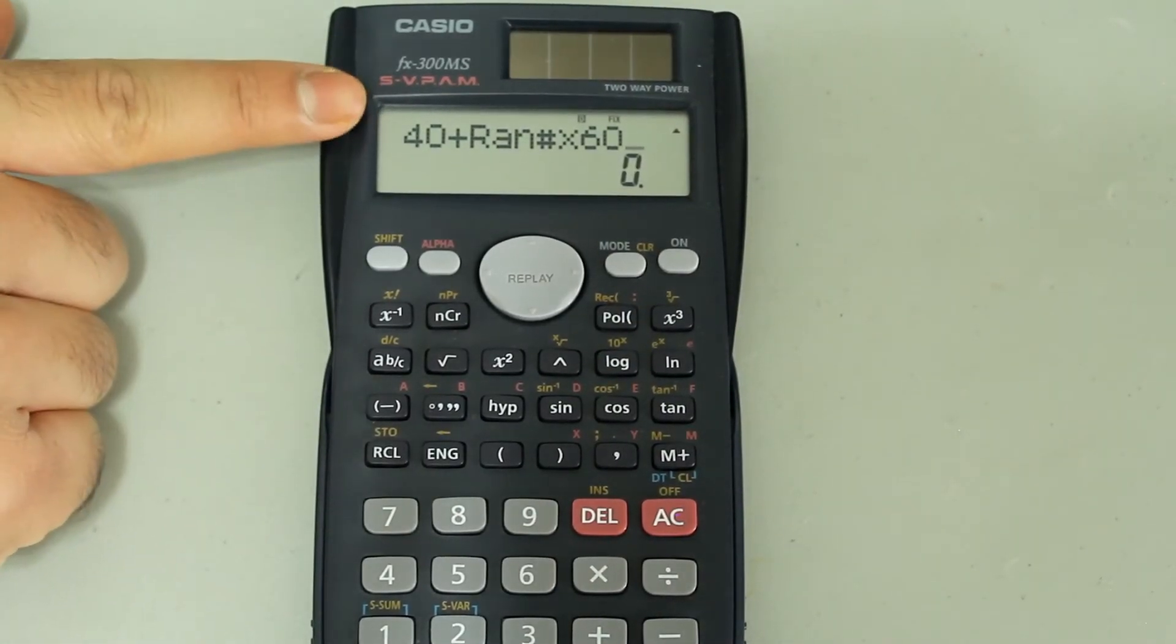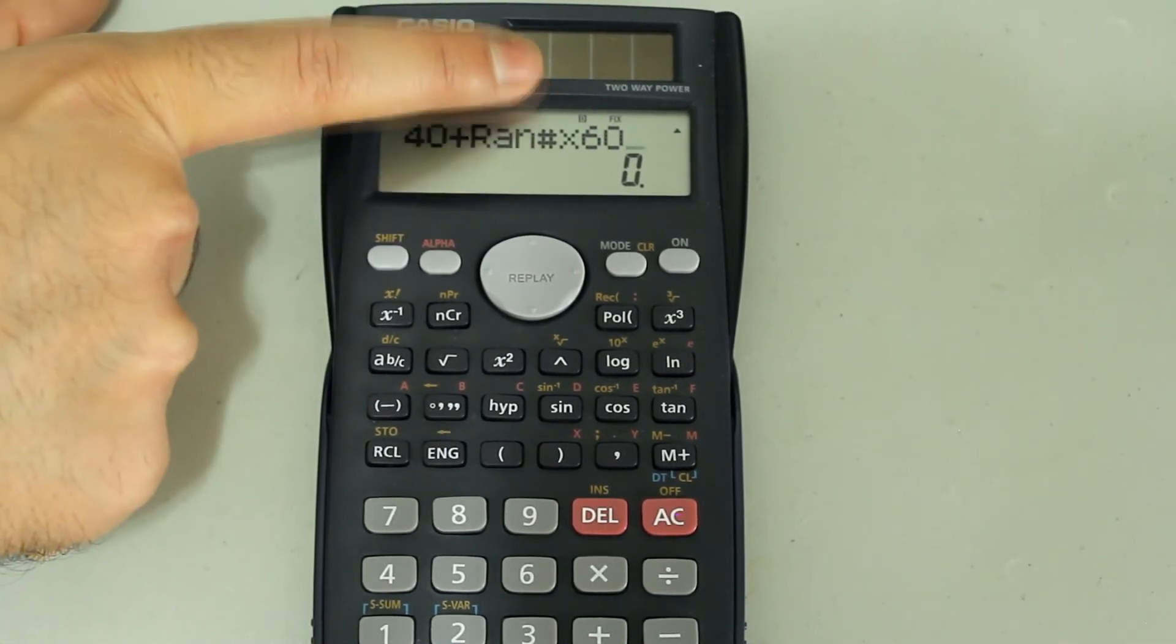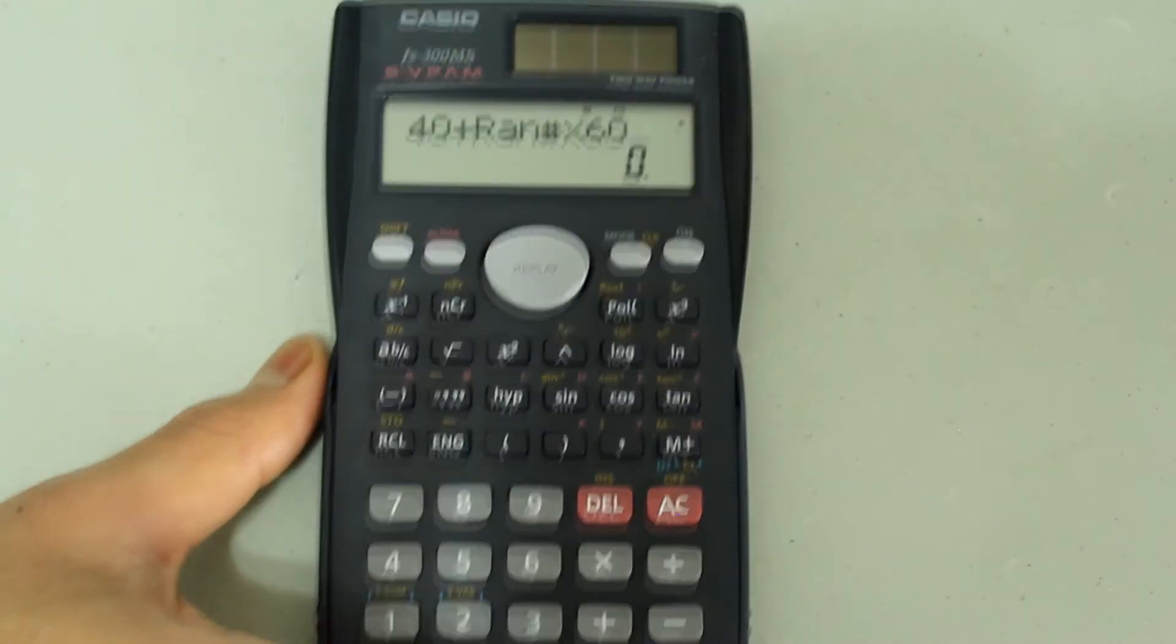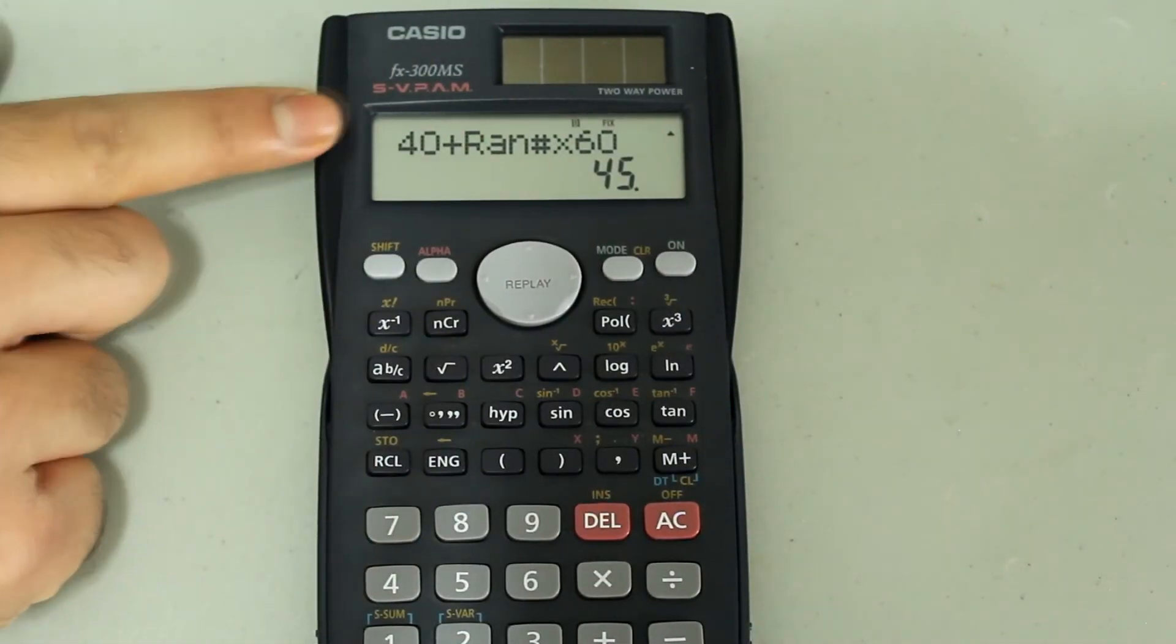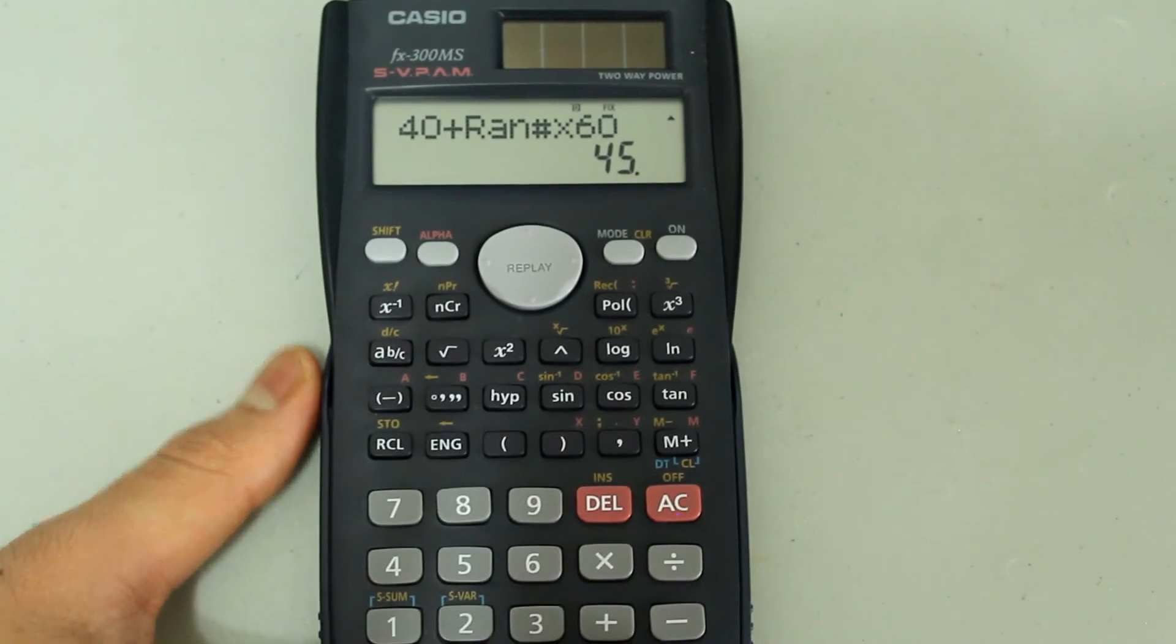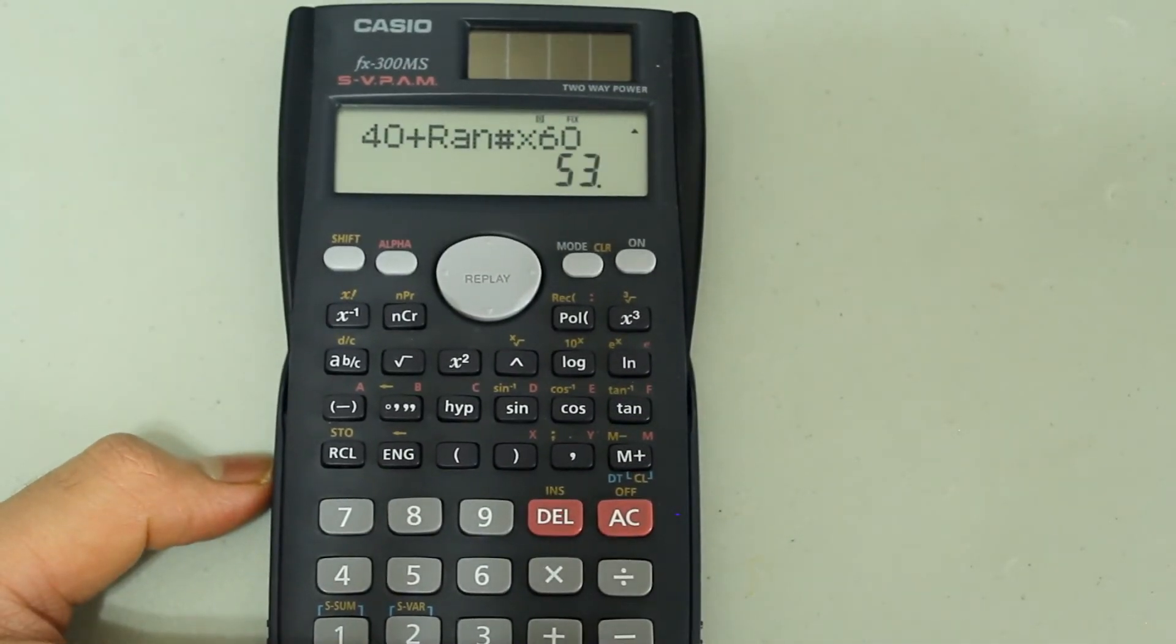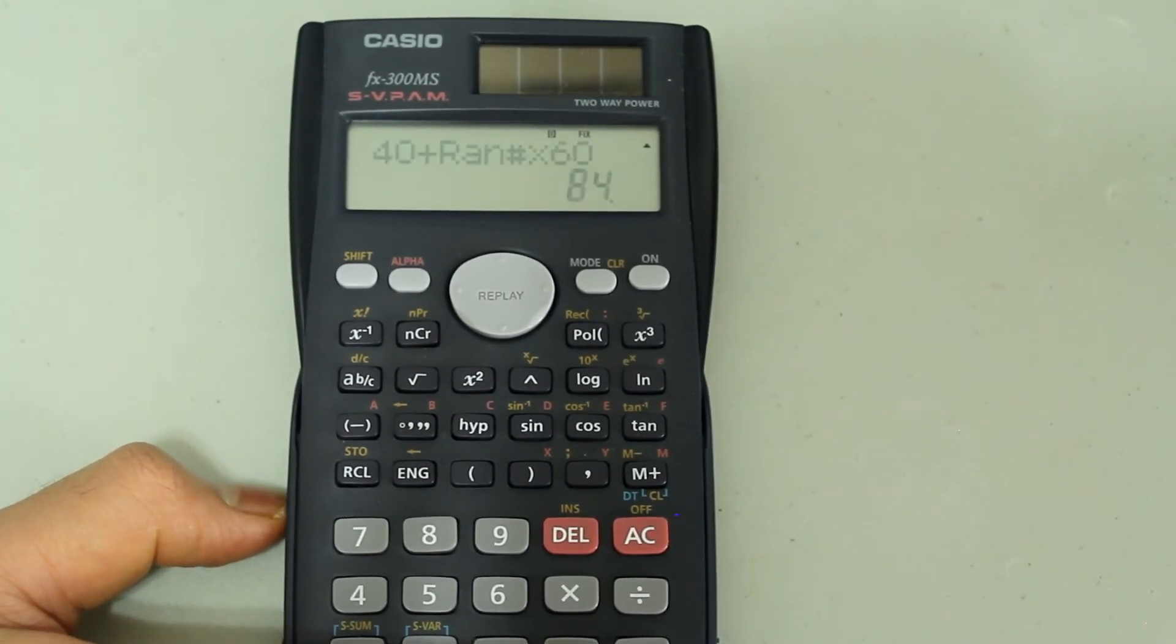So what we did first is we typed in the lower value, then added to that the random number generator multiplied by the difference between our upper value and lower value. Now if you press equal, the calculator will generate numbers between 40 and 100. I'm going to continue to press equals and the calculator will continue to generate random numbers between 40 and 100.